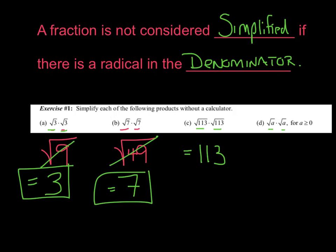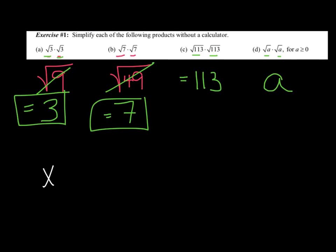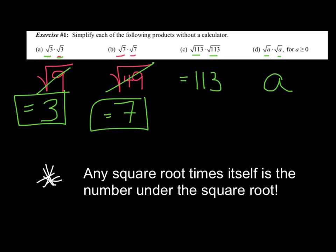And radical A times radical A? You've guessed it — that's just A. Here's our big deal: any radical times itself is just the number under the radical. Let's get this copied in your notebook nice and neatly. Any square root times itself is the number under the square root. Pretty convenient.